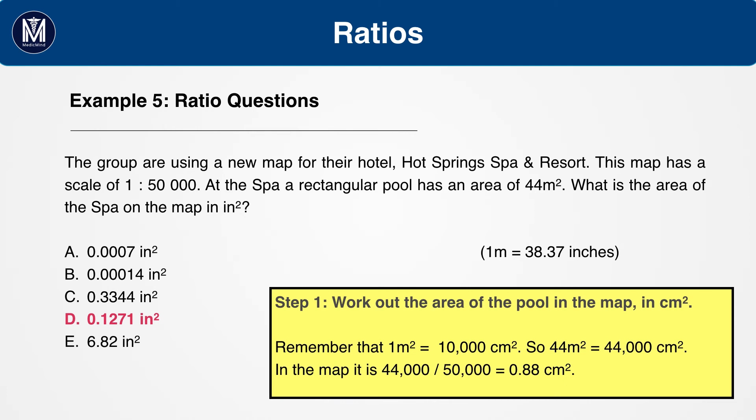Firstly, work out the area of the pool in the map. Here, we are working backwards as they have given us an area in real life. The area in real life is 44 metres squared. We should convert this to centimetres squared to prevent our numbers becoming too small when we scale down. Bear in mind that 1 metre squared equals 10,000 centimetres squared. So 44 metres squared equals 44,000 centimetres squared.